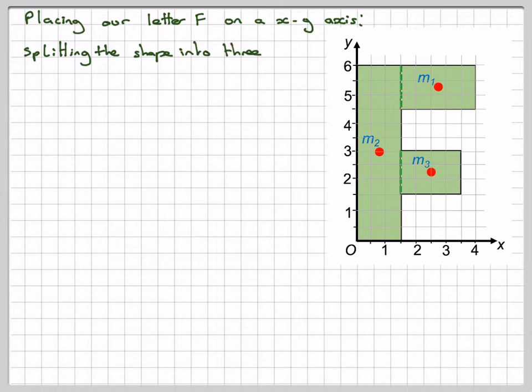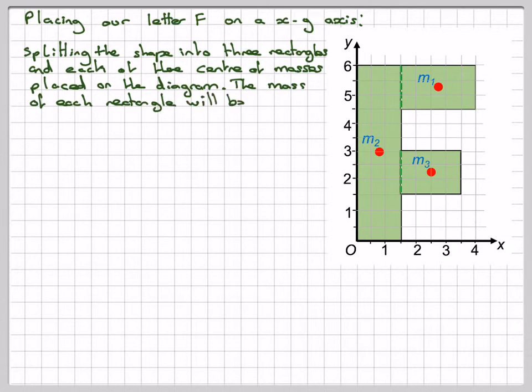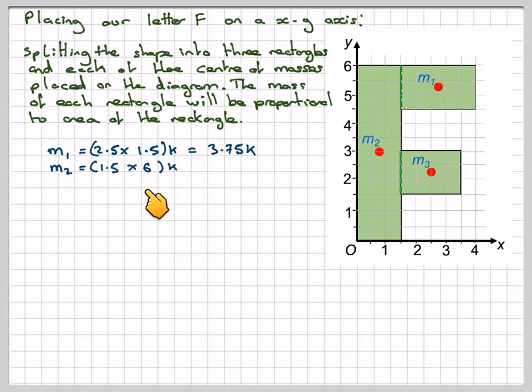So splitting the shape into three rectangles, each of the center of masses placed on the diagram, the masses of each rectangle will be proportional to the area. They're all made of the same material, just be proportional to the area of the material. So working out the area of this one, that's 2.5 times 1.5 times k, times some constant of proportionality. And don't worry, this will cancel out at the end anyhow. That's equal to 3.75k. M2 will be 1.5 times 6, 1.5 times 6, and that's going to be 9k. So the mass of that will be 9k. And this one will be 2 times 1.5, which will be 3k.